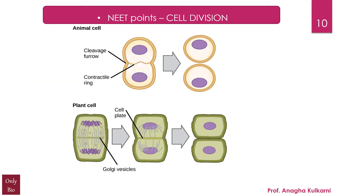You can see on the screen what happens during cytokinesis in an animal cell and in a plant cell. They clearly differ from each other with respect to cytokinesis — in a plant cell there is formation of a cell plate, while in an animal cell there is a cleavage furrow, which is not seen in the plant cell.